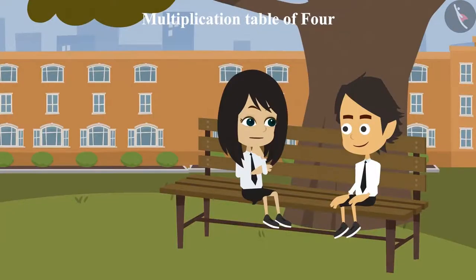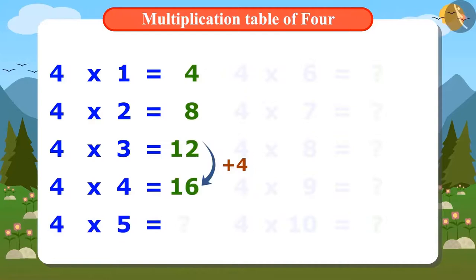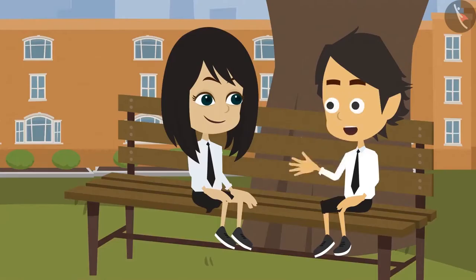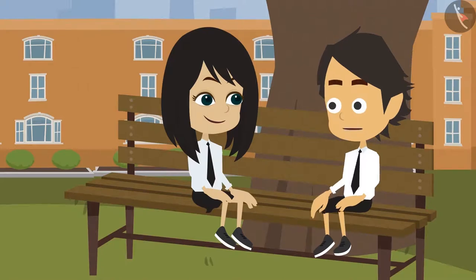That means we can find the next number in the multiplication table of 4 by adding 4 to 16, which will be 20. In the same way, we can find the next number by adding 4 to 20, that is 24. This way, we will continue to add and we will find out the next number. Now we get to know the whole multiplication table of 4.